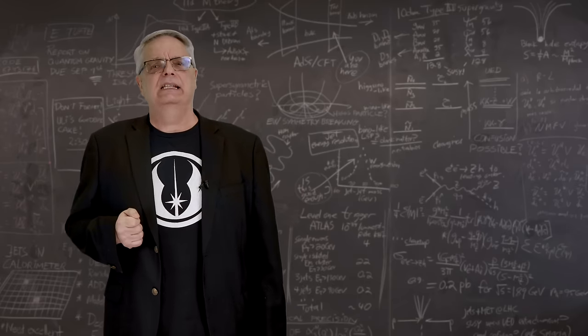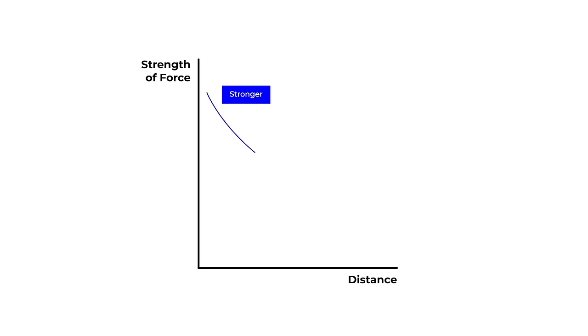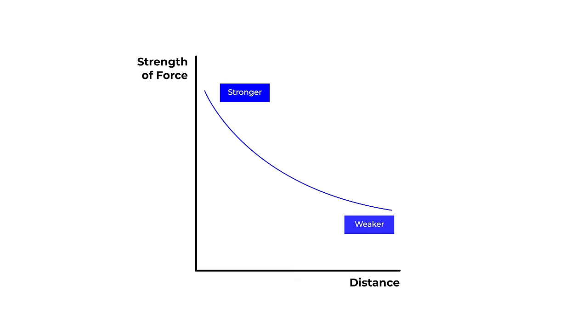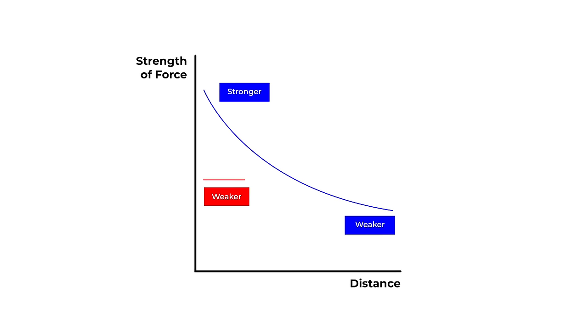To illustrate the idea, suppose there were two hypothetical forces, one that is very strong for close distances but gets weaker for long distances, while there is a second force that is weaker at short distances but doesn't change.